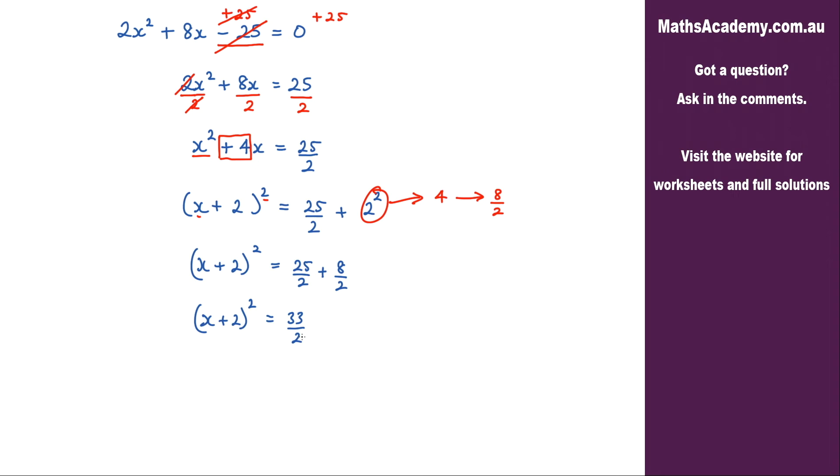Now the next step is to eliminate this squared here and I do that by taking the square root. If I take the square root to the left I must take the square root of the right. Now what you need to remember is be very careful and always put in the plus and minus. When you take the square root of this number you will get a positive and a negative answer.